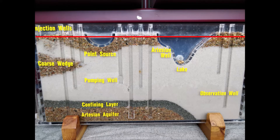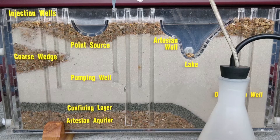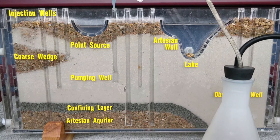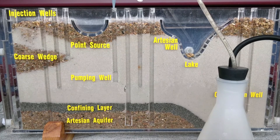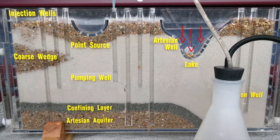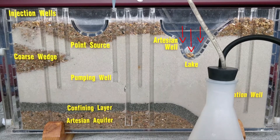Do you think the water table can change? Yes, it absolutely can. This actually happens when we pump water from the ground using pumping wells. Pumping groundwater may look something like this. Do you see what is happening to the water table? The water table is lowering as we pump groundwater.